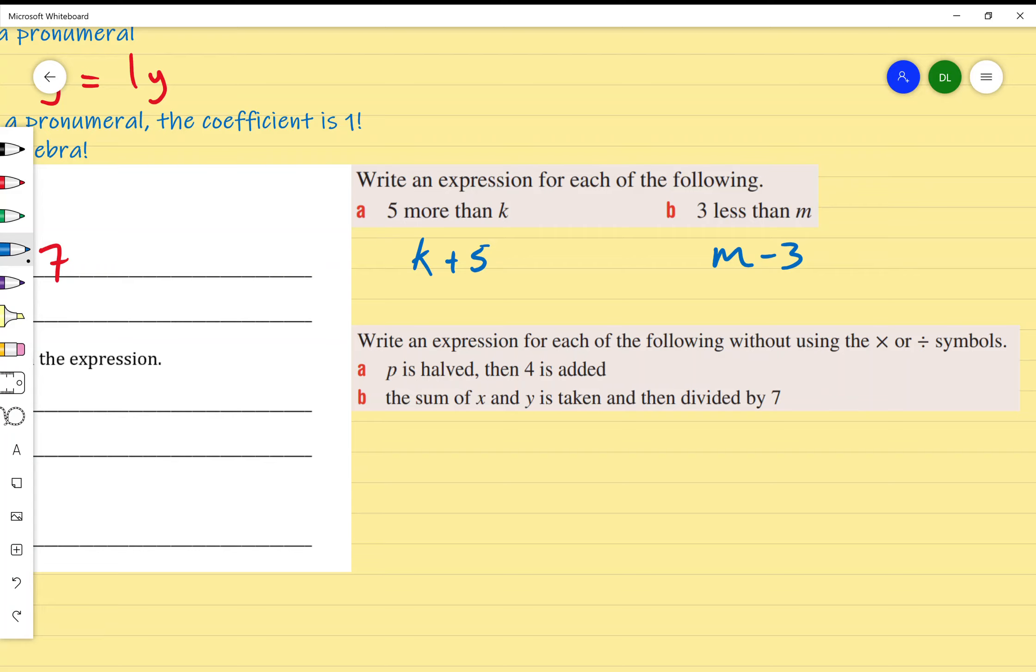Now we need to write expressions without using the multiply or divide symbols. For the first one, p is halved and then 4 is added. I know that p is being halved, or half of p is just p over 2, because it's p divided by 2. And then 4 is added, so I add 4 like this. I want to note that's not the same as if I was to write p plus 4 over 2. If I go p over 2 plus 4, that's a different process than p plus 4 and then divide it by 2. Remember to keep the order in mind.